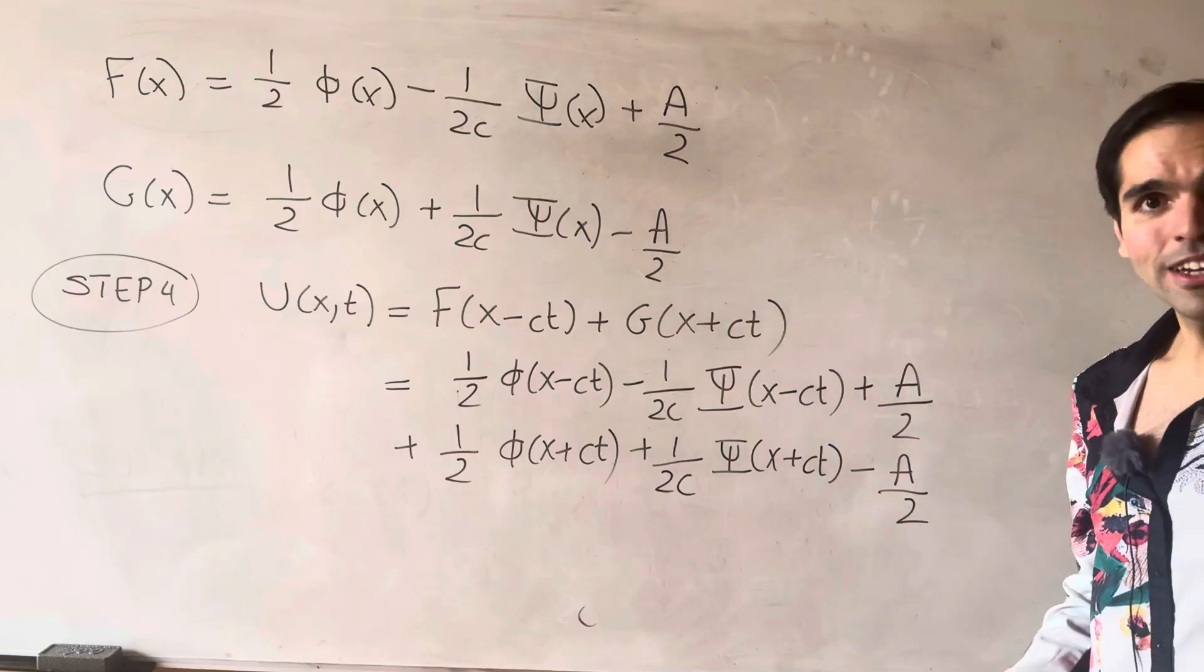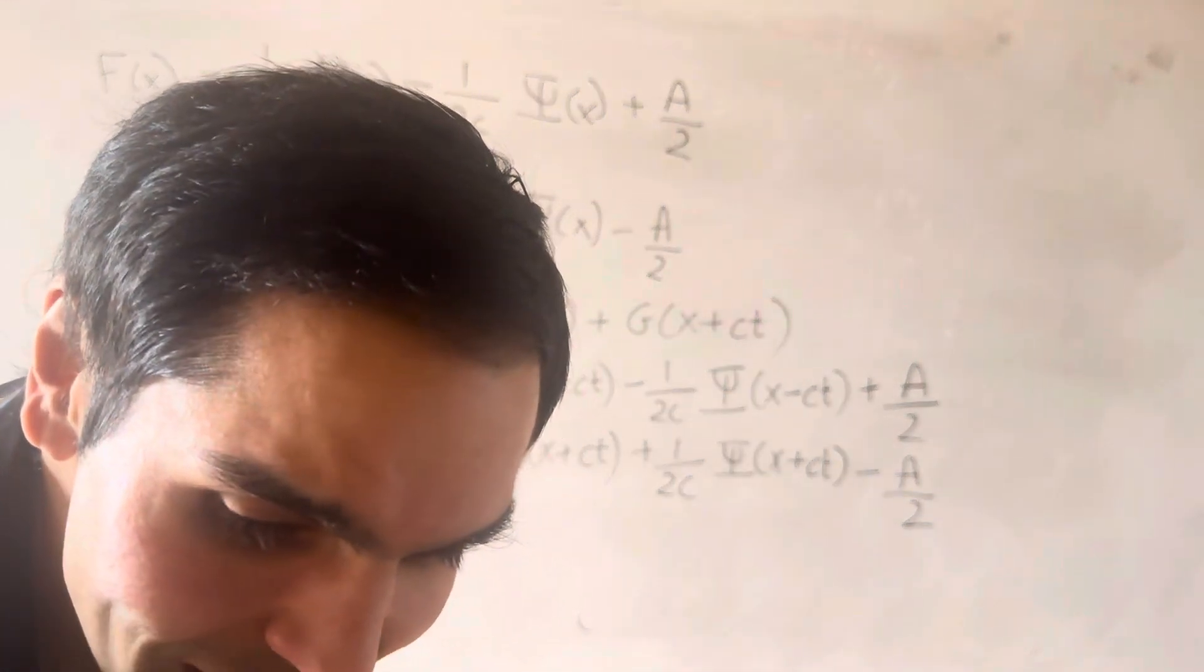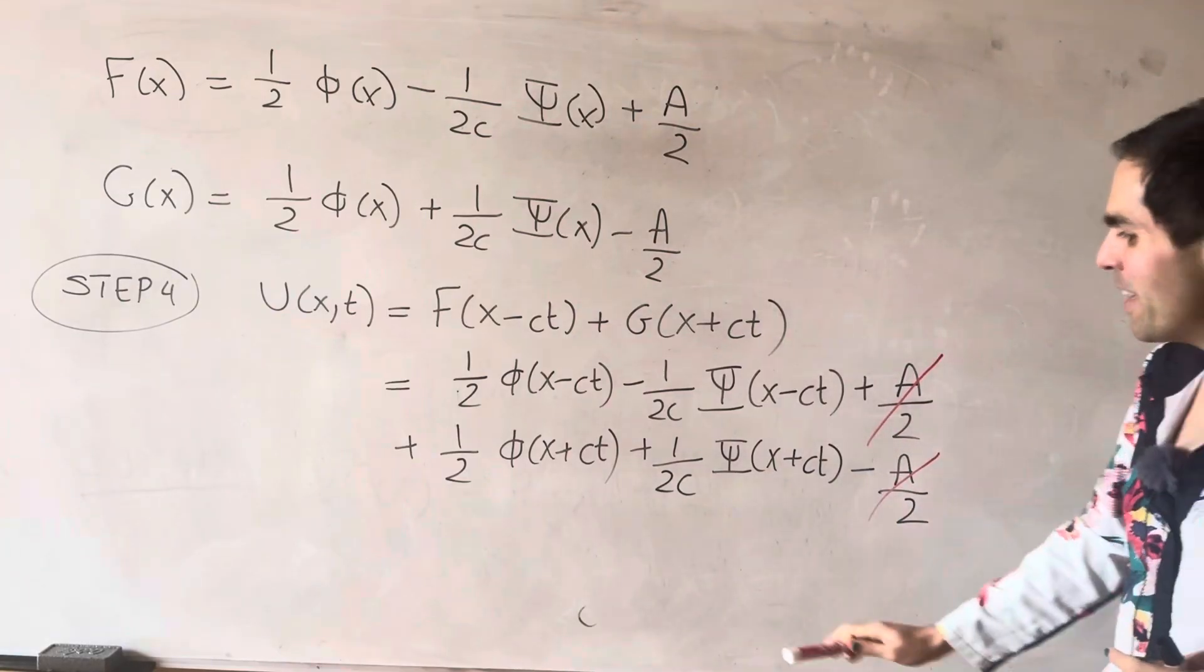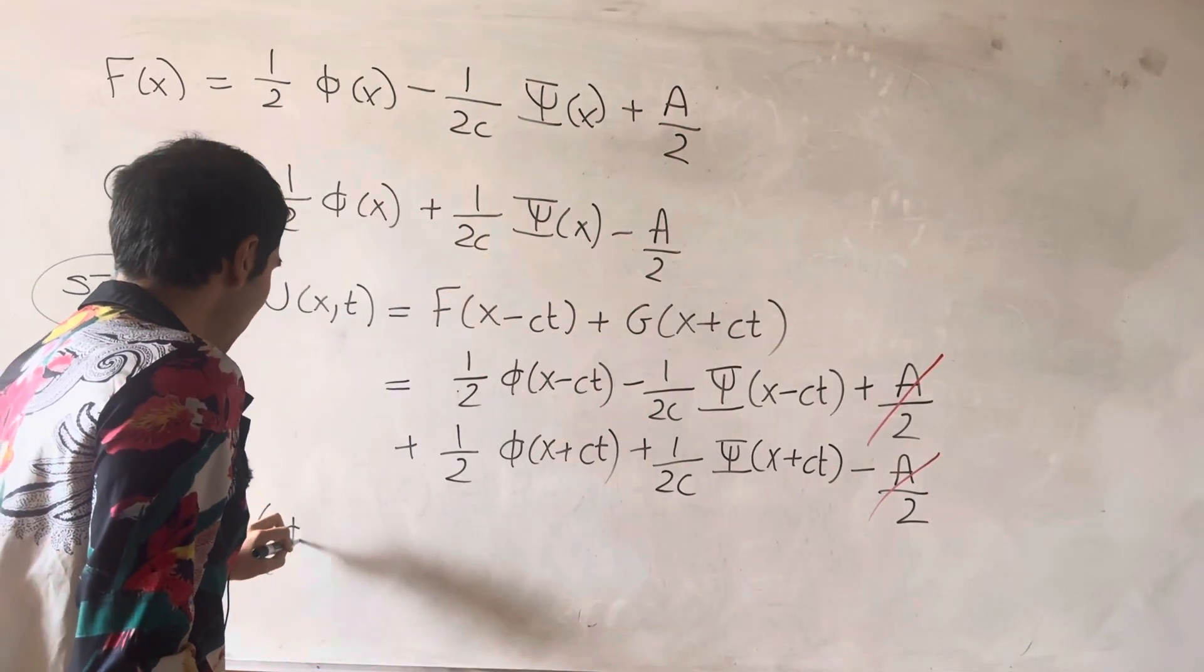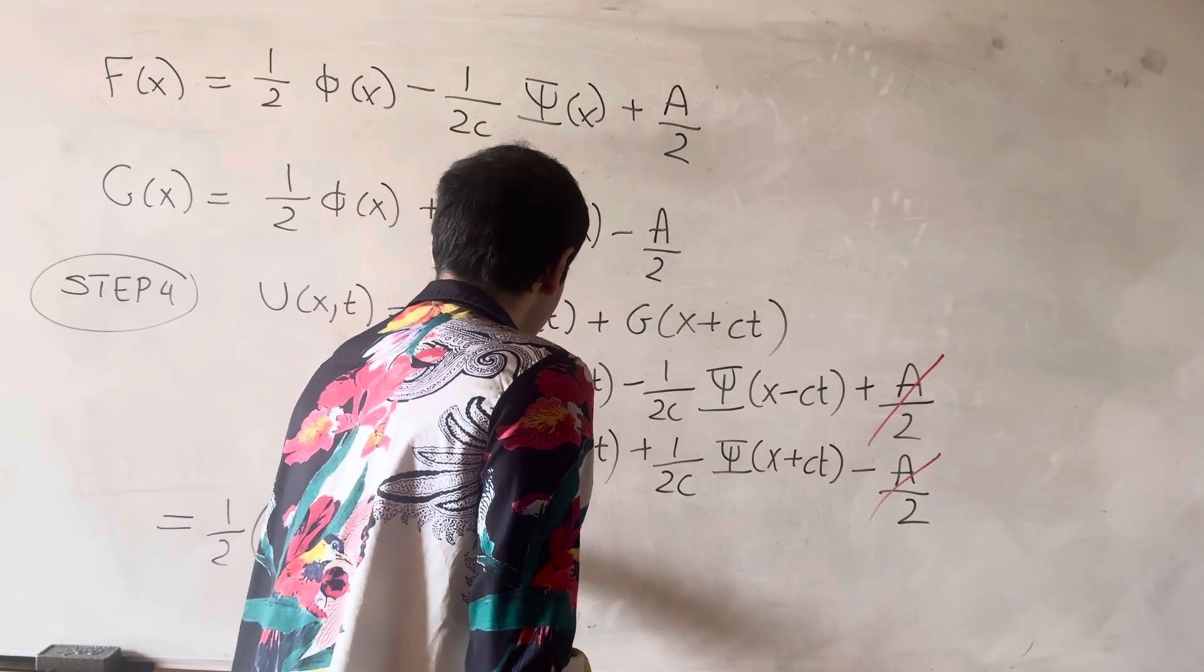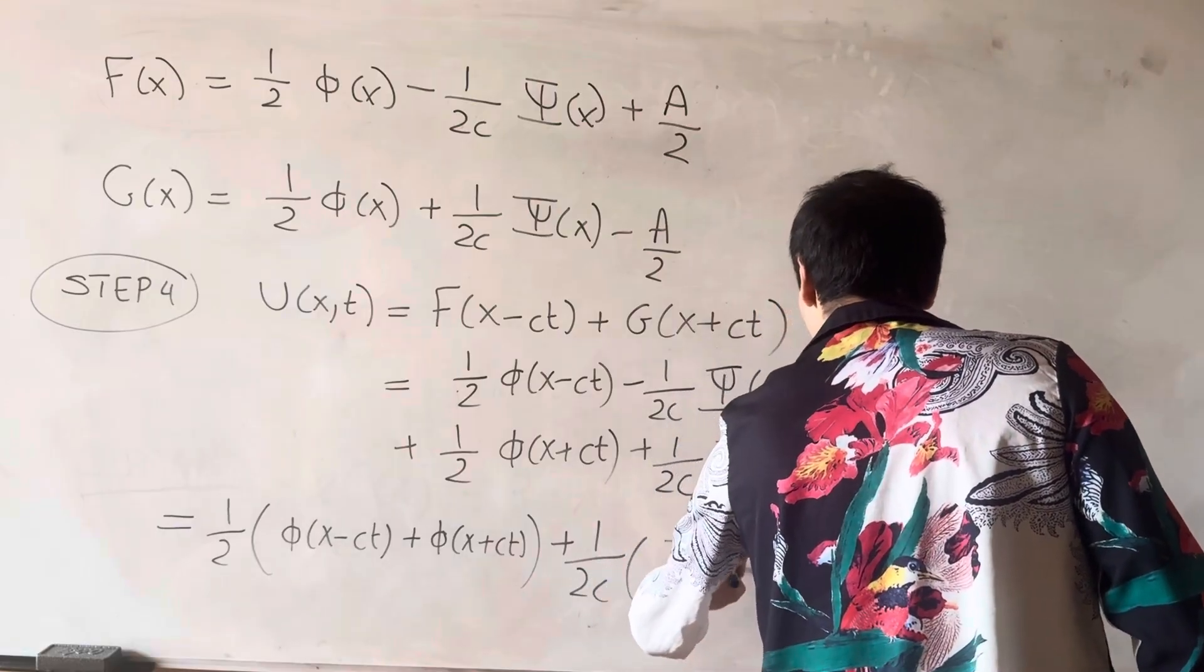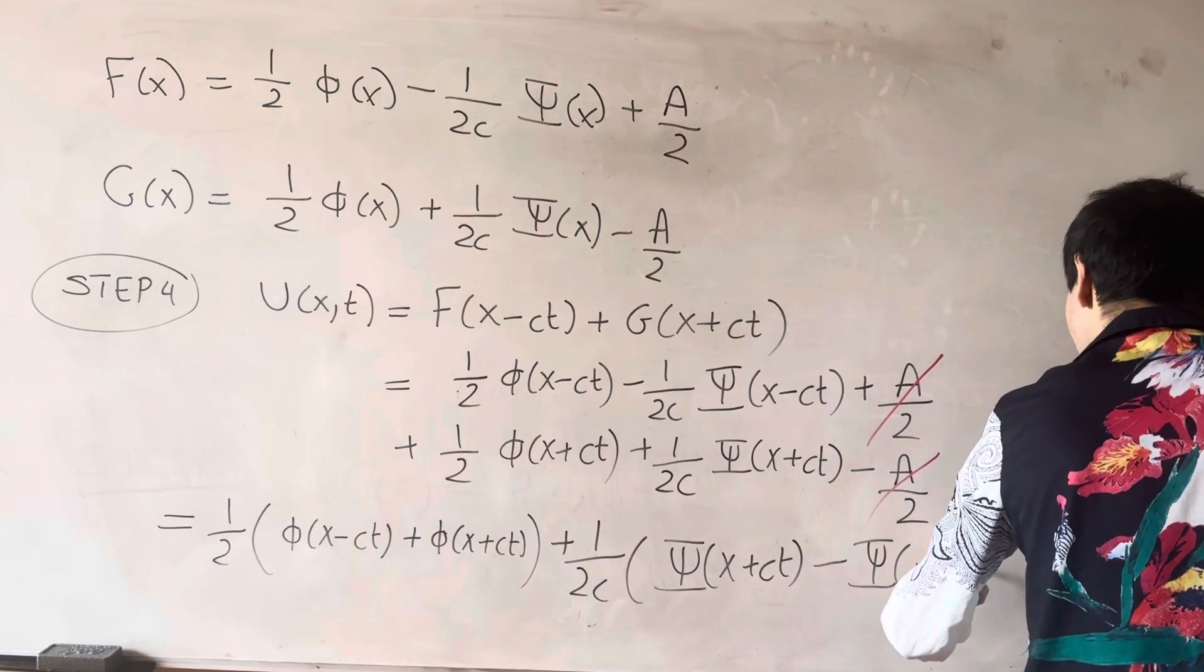So you already noticed something amazing going on. The pesky constants of integration actually cancel out. So we get the most satisfying moment. And then we can factor out some things. So that is one half phi of x minus ct plus phi of x plus ct. And then plus one over 2c big Psi of x plus ct minus big Psi of x minus ct.